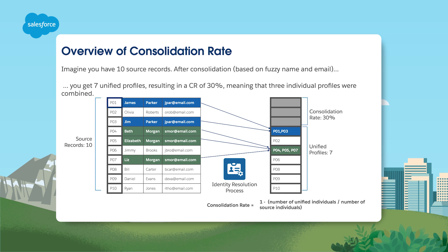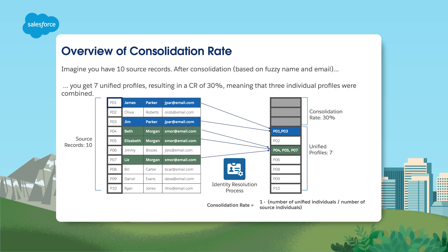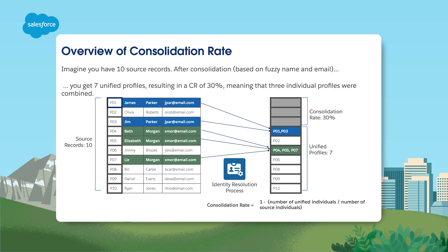It's very important to understand that there's no fixed standard or fixed target for consolidation rates, as it depends on industry requirements, business specifics, and your data. To adjust the consolidation rate, consider adding or removing match rules. The consolidation rate reacts to rule sets for matching, so it's important to set them carefully.